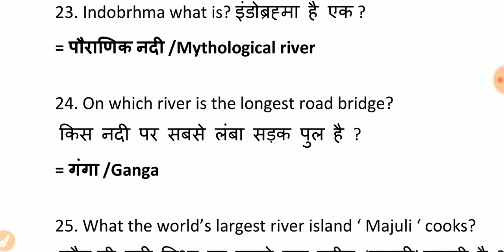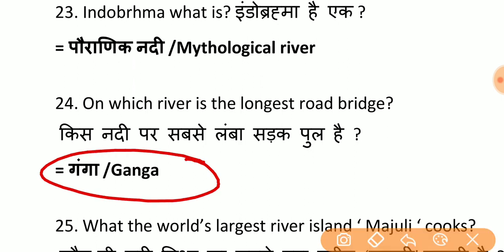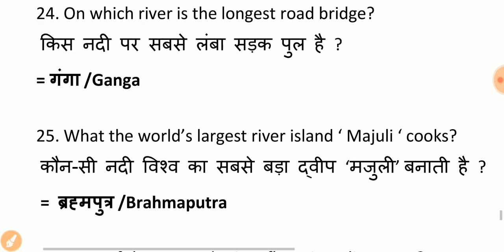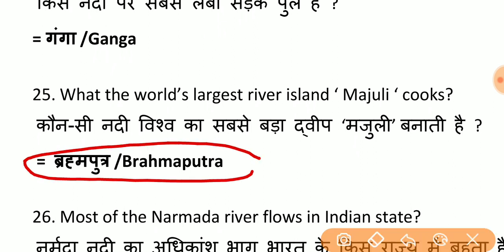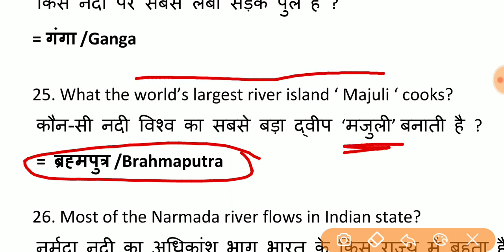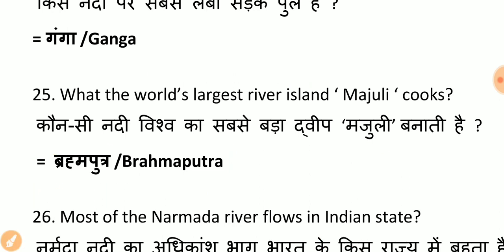On which river is India's longest road bridge? The answer is Ganga — Bogibeel Bridge. Remember things connected to this as it is a current affairs topic. What is the world's largest river island? Brahmaputra river forms the world's largest river island, Majuli. Remember: Majuli is formed by Brahmaputra.